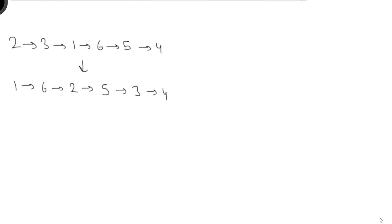Hey guys, welcome to Coding Simplified. We'll see a new problem in linked lists. We are given any random linked list — there is no order — and we need to rearrange it so that first we have the minimum element, the least value element, and then we have the maximum value.